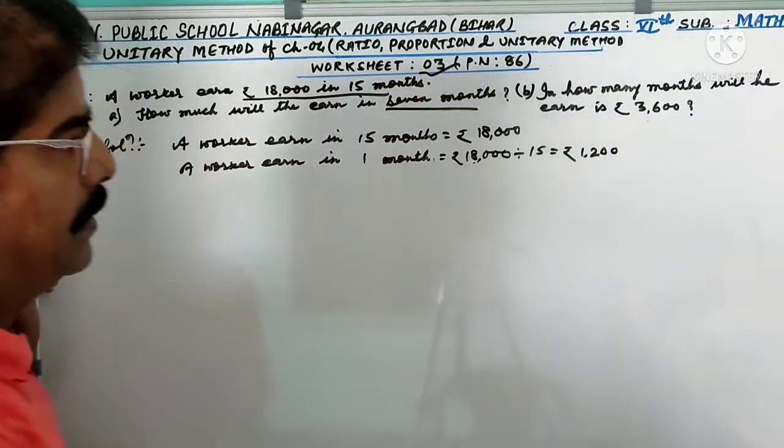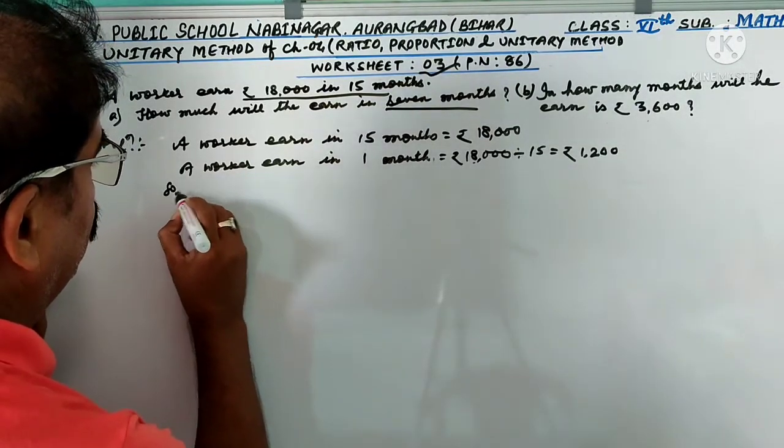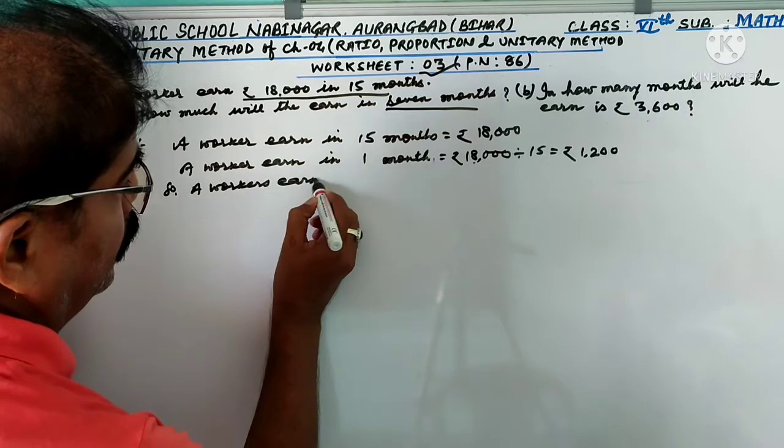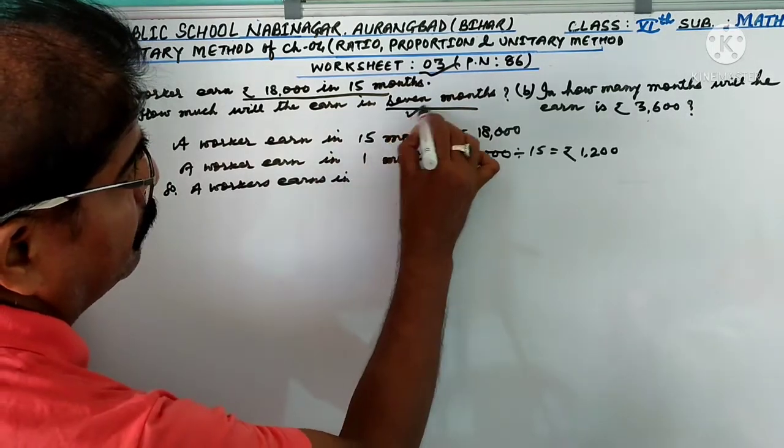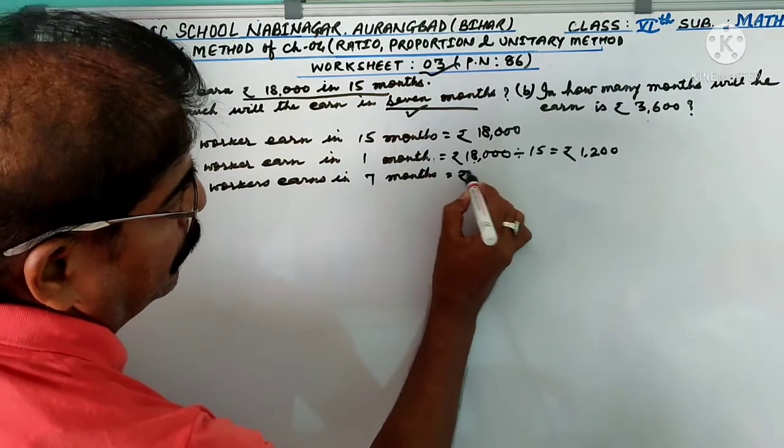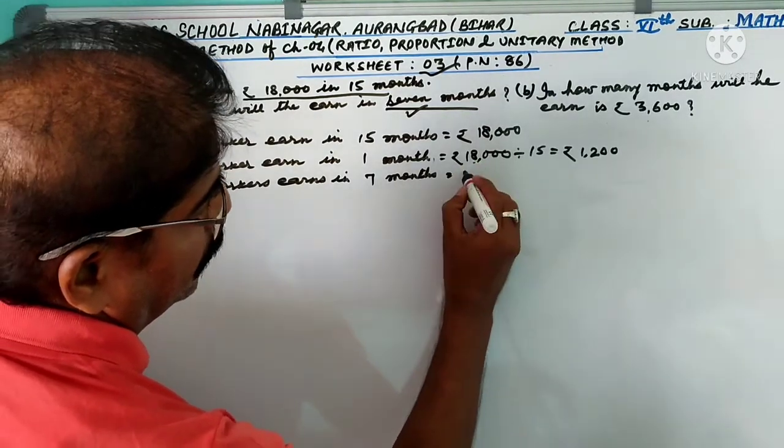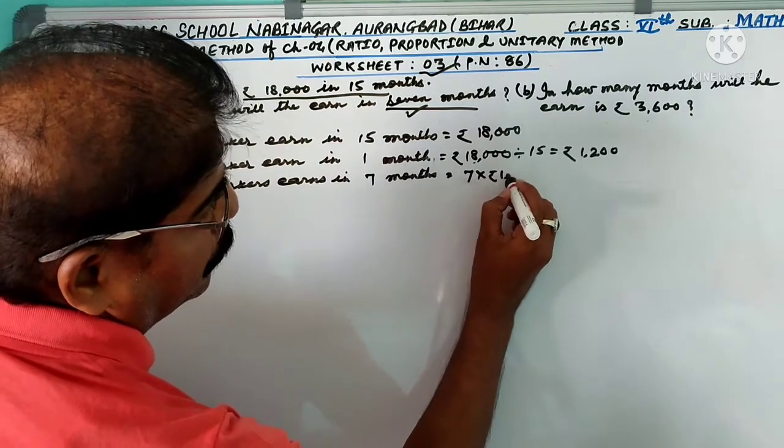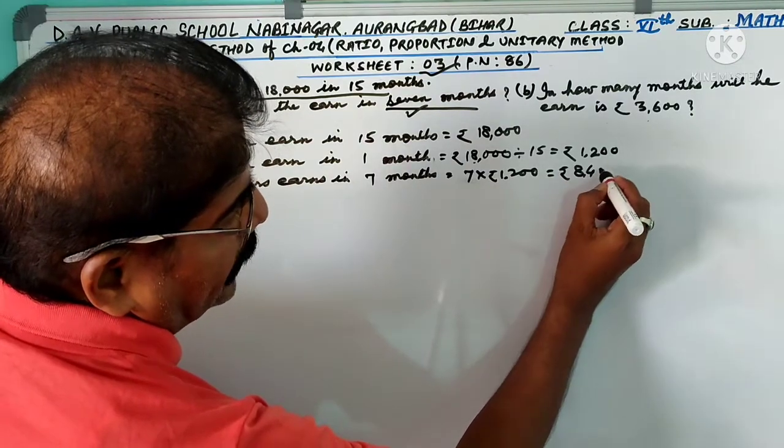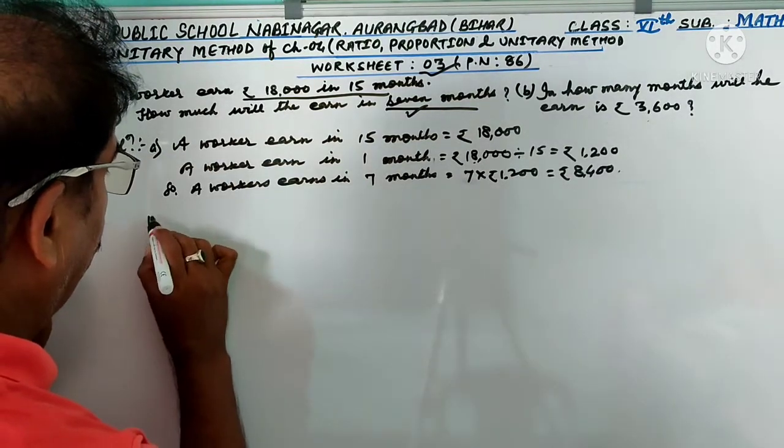And a worker earned in 7 months equal to 7 into Rs 1,200, equal to Rs 8,400. And this is the solution of A and B.